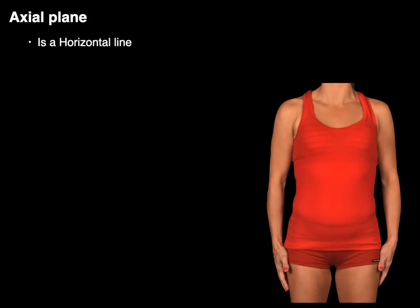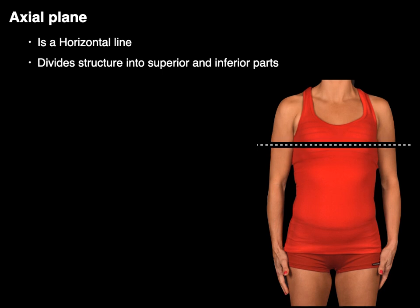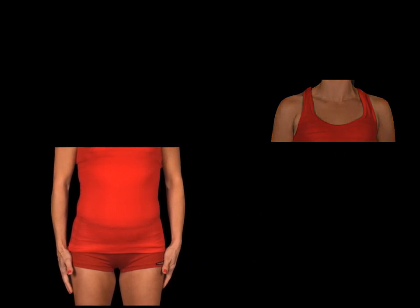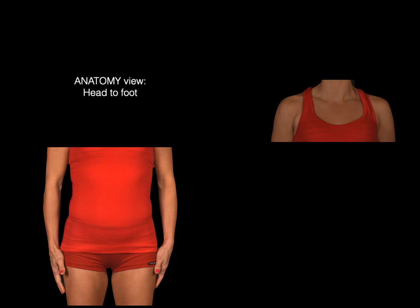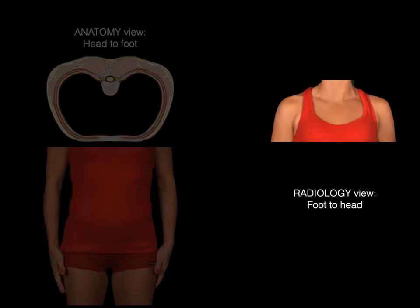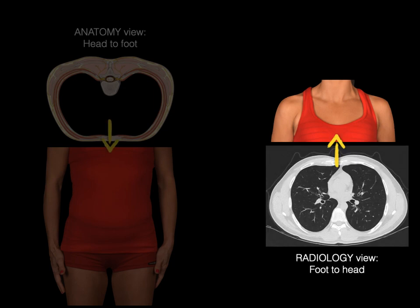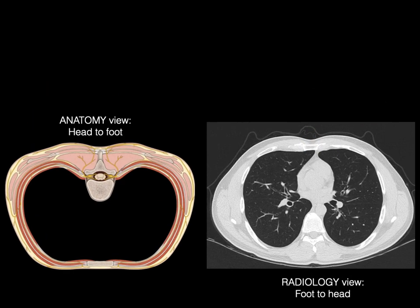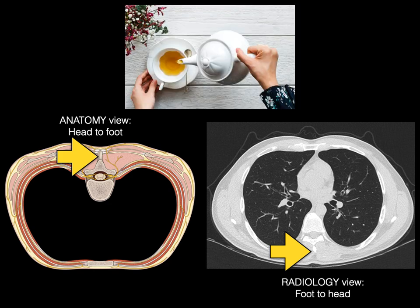An axial plane is a horizontal line that divides structures into superior and inferior parts. Now, a little tangent: in cross sections, anatomists view cross sections from head to foot, and that's how the image is often presented. In contrast, radiologists view cross sections from foot to head. You'll notice that the back of an anatomy cross section is at the top of the image, while the back in a radiograph axial section is at the bottom.